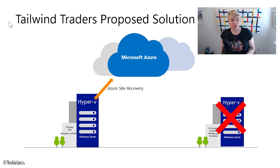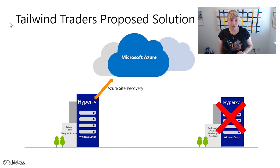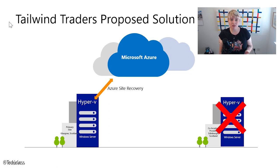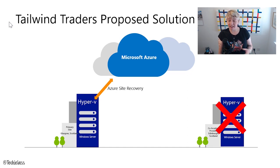The solution is simplified — we can do away with that secondary site in Edinburgh. We don't have to pay for the co-location and we can get rid of the hardware or utilize it somewhere else. Then we use Azure Site Recovery on-premises to replicate everything up into Azure, and Azure becomes that secondary site for them.